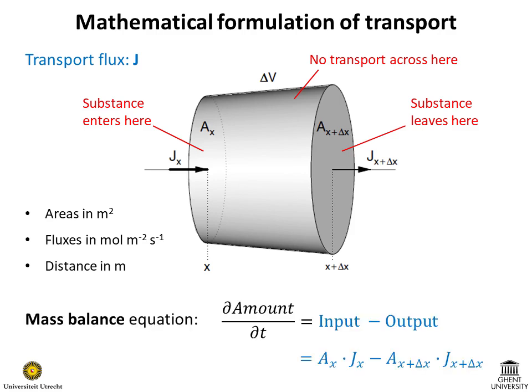If there is no reaction, the amount of the substance inside the volume delta V will increase at the rate given by the products of Ax and Jx, but it will decrease at the rate given by the product Ax plus delta x and Jx plus delta x. This is because the area is in square meter, the fluxes are in moles per square meter per second, and so their product is in moles per second.